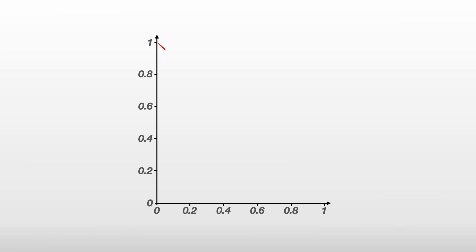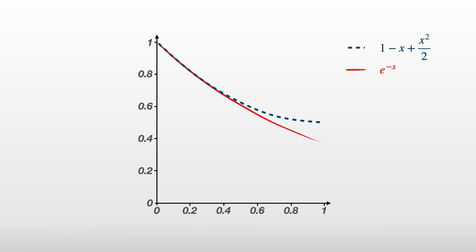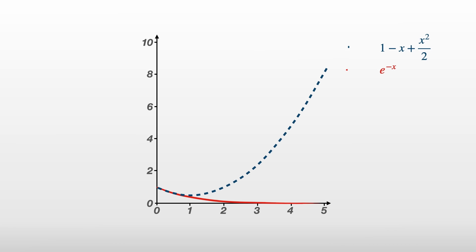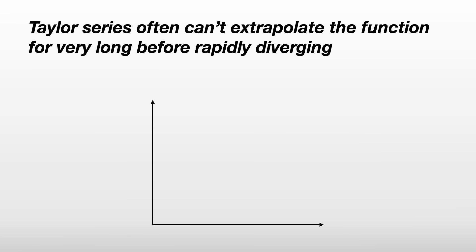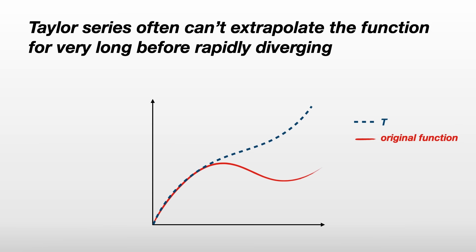If we plot our function e to the minus x and the Taylor series, we see it follows the original function quite well to begin with, and then gets worse over time — it doesn't improve after that. For x bigger than 1, the Taylor series shoots up towards infinity as the x squared term begins to dominate, while e to the minus x gets smaller and smaller with increasing x. This is unfortunately a general property of Taylor series: they often can't extrapolate the function for very long before rapidly diverging to positive or negative infinity.